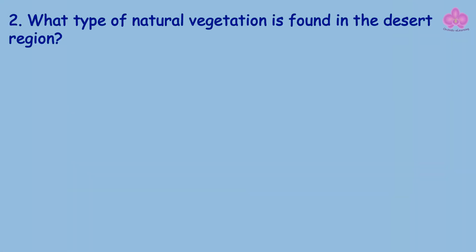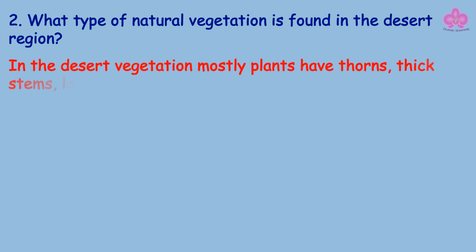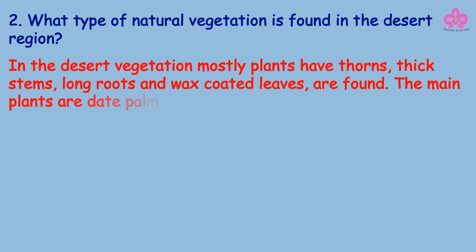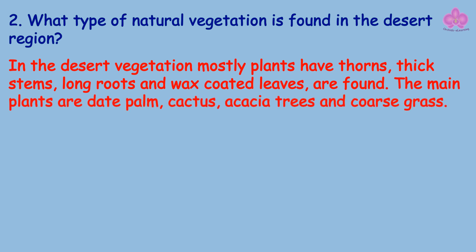Question: What type of natural vegetation is found in the desert region? Answer: In desert vegetation, mostly plants have thorns, thick stems, long roots, and wax-coated leaves. The main plants are date palm, cactus, acacia trees, and coarse grass.